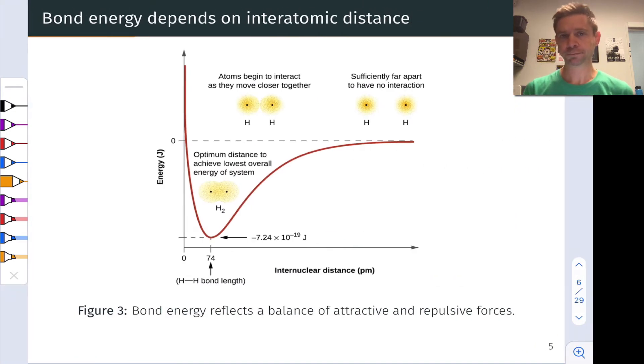There's a distance dependence to bond energy, and it has to do with the fact that orbital overlap depends on the distance between the two atoms involved in the bond. So say, for example, we started with two atoms of hydrogen at a relatively large distance so that they're far enough away that they hardly know the other one is there, sufficiently far apart to have no interaction.